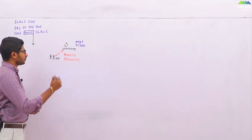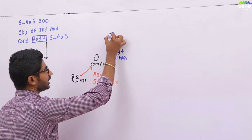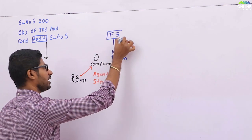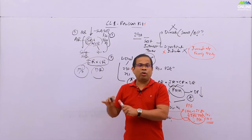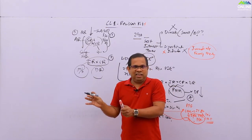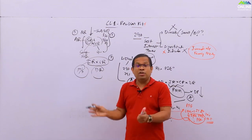The management prepares financial statements. Inherent risk and control risk is with the client. The auditor cannot reduce it, the auditor can assess it, the auditor can calculate it only, auditor cannot reduce it.